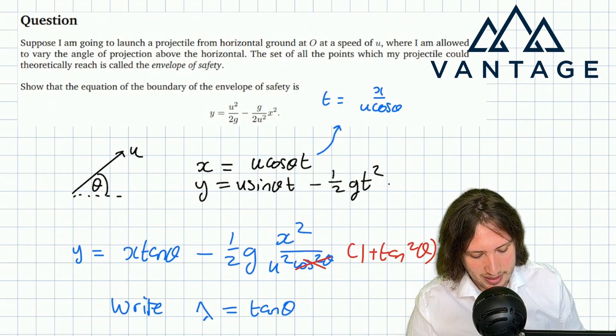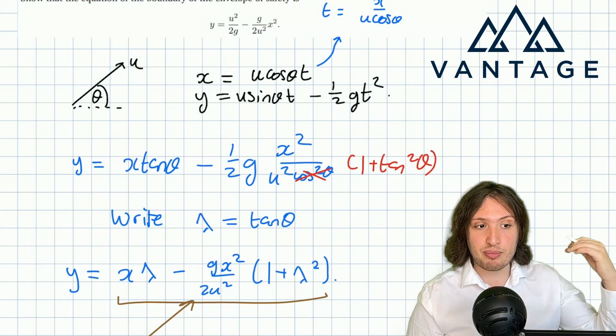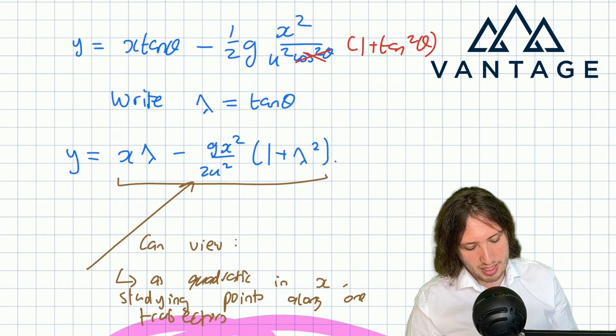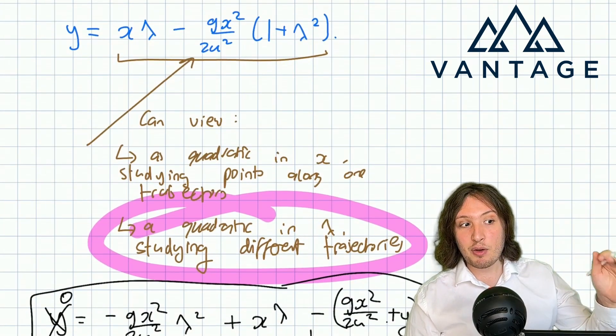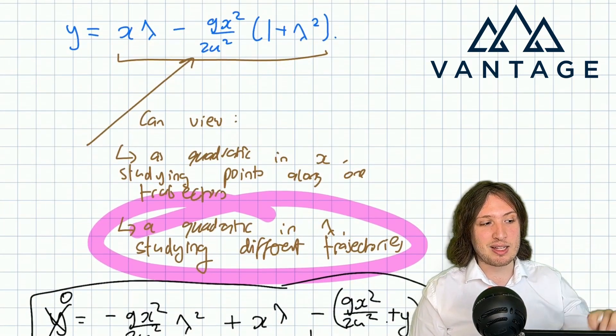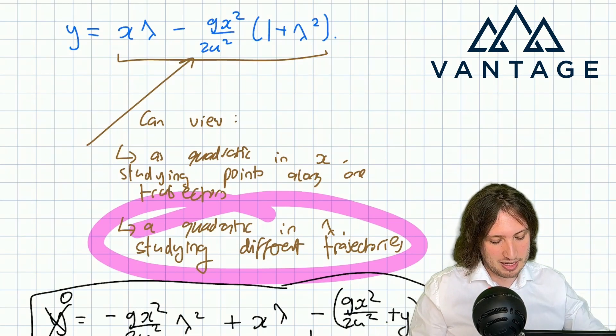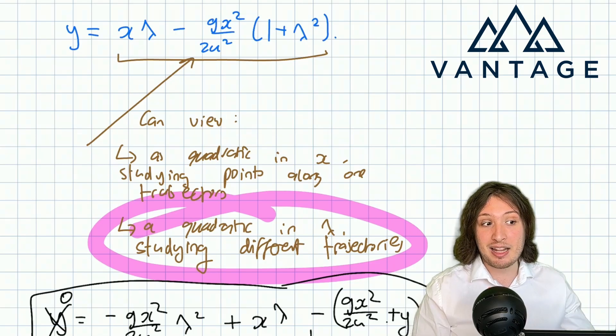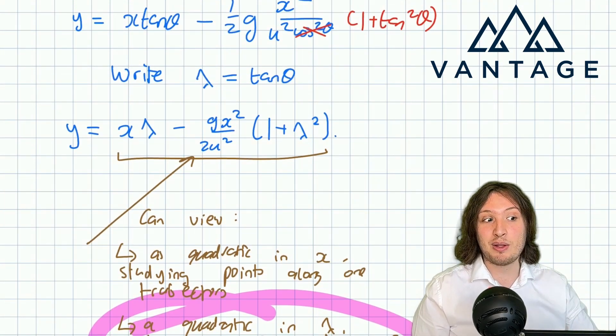Lots of really transferable ideas in this problem. Notably, when dealing with projectiles it's often a good idea to construct this Cartesian equation of motion. If you're asking a question not about points along a single trajectory but about all possible trajectories, viewing it as a quadratic in tan θ—which we chose to call λ—is a very useful approach.